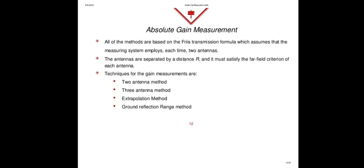By applying logarithm on both sides, we get the equation in decibels: GT(dB) + GR(dB) = 20 log(4πR/lambda) + 10 log(PR/PT). If both antennas are identical, then GT equals GR, so 2G = 20 log(4πR/lambda) + 10 log(PR/PT). Therefore, G = (1/2) × [20 log(4πR/lambda) + 10 log(PR/PT)]. Since we know all the parameters PR, PT, R, and lambda, we can find the gain of the antenna.